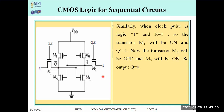Case 3: clock is 1 and R is 1, S is 0. When clock and R are both 1, M1 will be on. This causes Q-bar to become 1. When Q-bar is 1, it feeds as input to M5 and M6: M5 (PMOS) will be off and M6 (NMOS) will be on, so Q will be 0. This means when R=1 and S=0, Q=0 and Q-bar=1 — this is the reset condition.